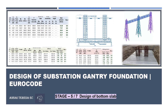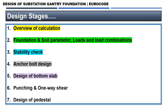Welcome viewers. In this video we are going to do the design of substation gantry foundation in Eurocode. This is Stage 5 out of 7, in which we are going to do the design of the bottom slab for the gantry foundation. Up to Stage 4 we have already covered: overview of calculation, foundation and soil parameters, loads and load combinations, stability check, and anchor bolt design.